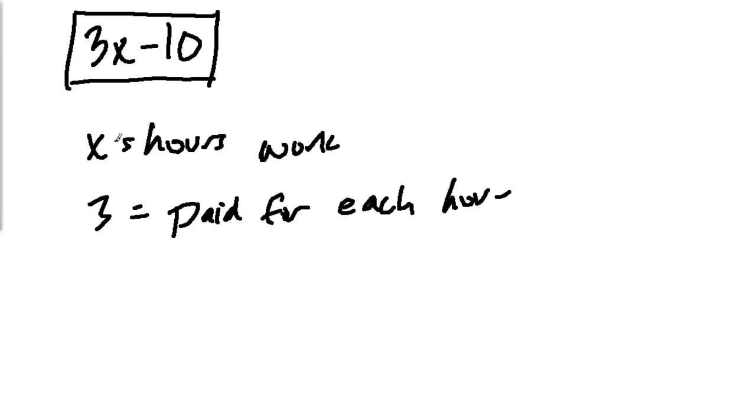And 3 could equal the amount you're paid for each hour. So for example, if you worked 2 hours, you would get 2 times 3, or $6, which is the multiplication statement right here. But minus 10, well, let's say your job is to paint a house.